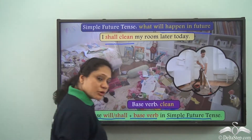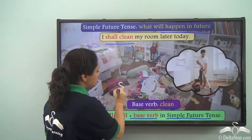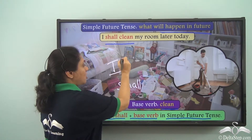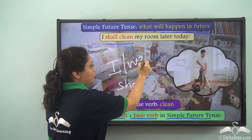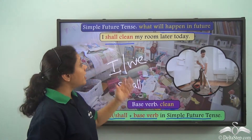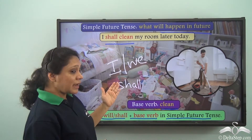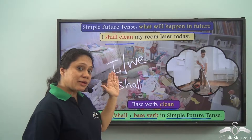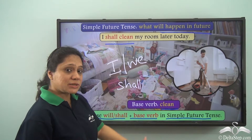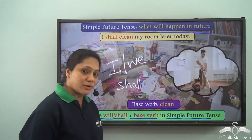You must remember that we use 'shall' only with 'I' or 'we.' So 'I shall clean my room later today' or 'I will clean my room later today' — both can be used. But we use 'shall' only with 'I' or 'we.' So to form verbs in the simple future tense, we use will or shall along with the base verb.